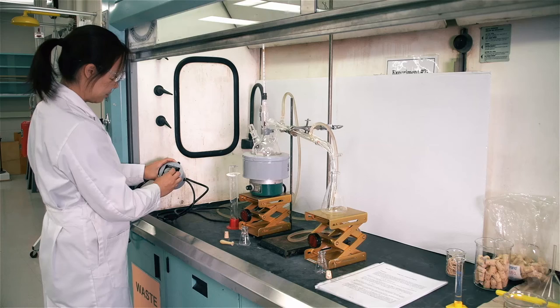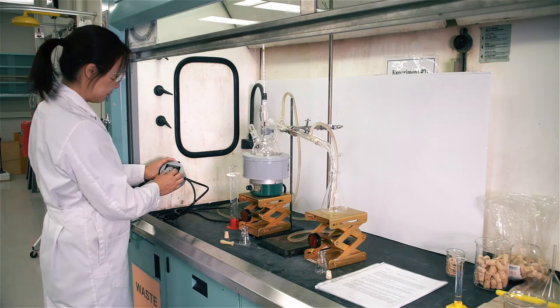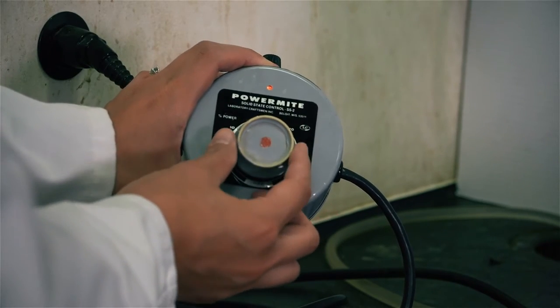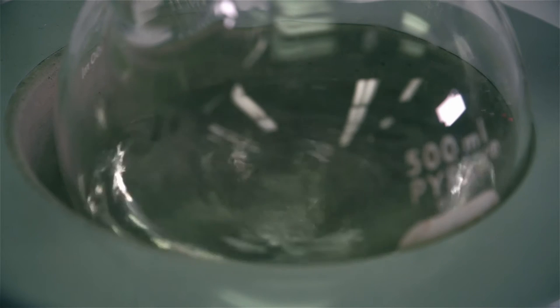Slowly turn on the magnetic stirrer. Start the distillation by setting the rheostat initially at 70. This value can be adjusted as required. Boil and distill gently.